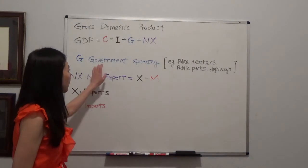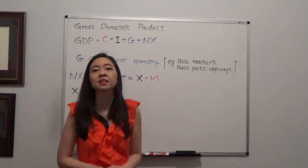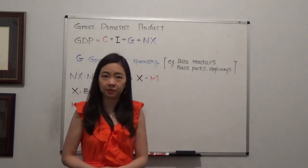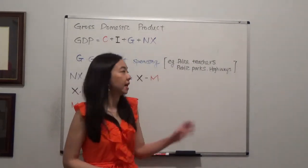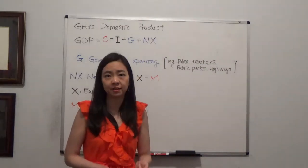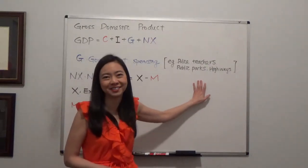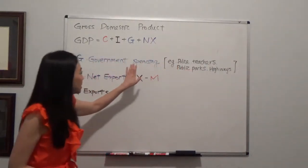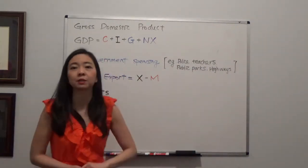So we know that government provides us a lot of services including police and teachers for public schools, public parks, and highways. And these are public goods, so the government will have to provide them. And of course the government will have to pay for these services. And therefore, the government spending should be included in the gross domestic product.